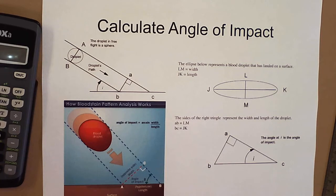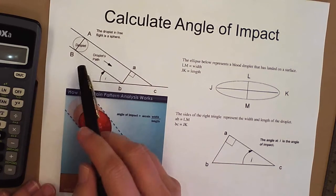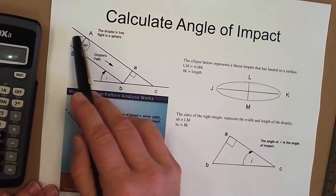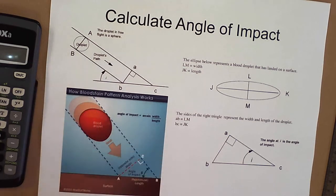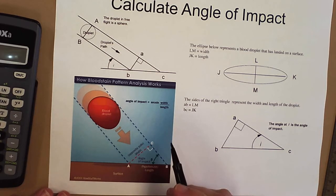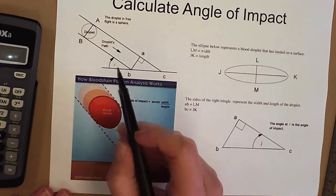You will need to know how to do these calculations for the quiz. So a couple of reminders: we talked already about the fact that when blood travels through the air it is in a spherical shape, and I wanted to show you two diagrams to show you where we actually get the trig functions from to be able to use them for calculating angle of impact.